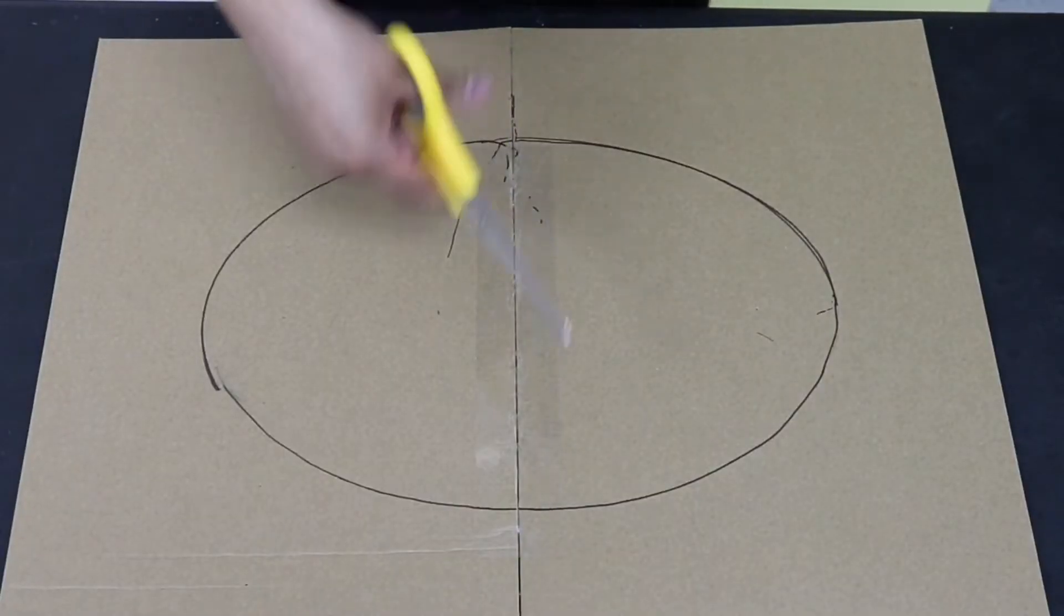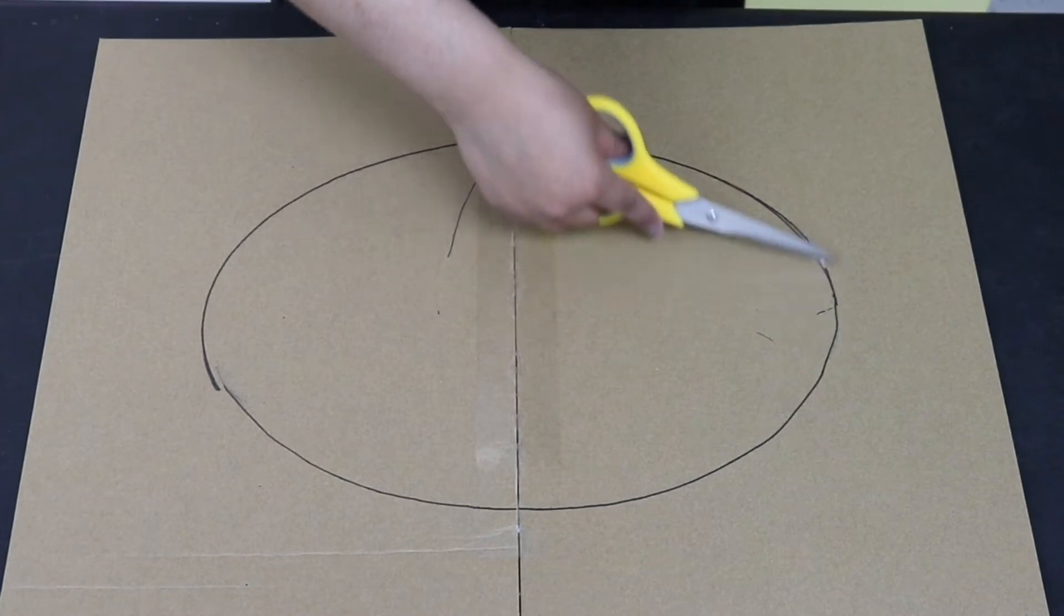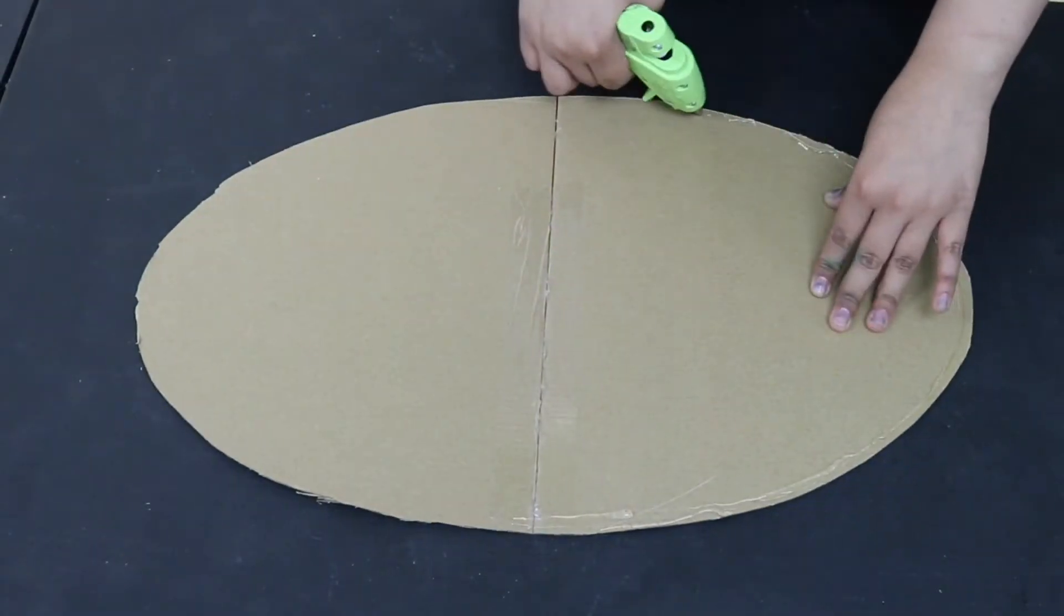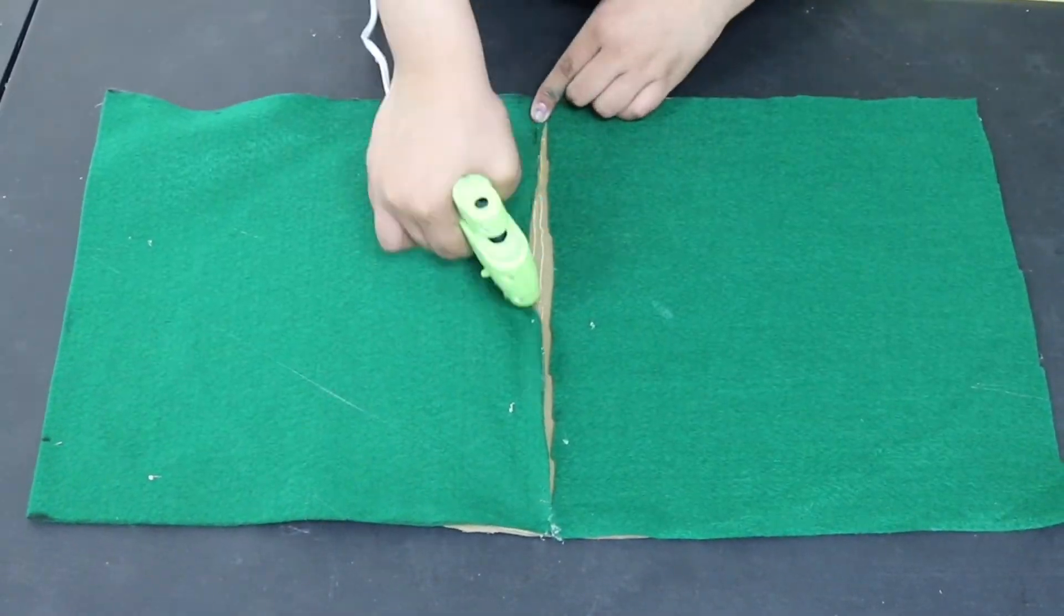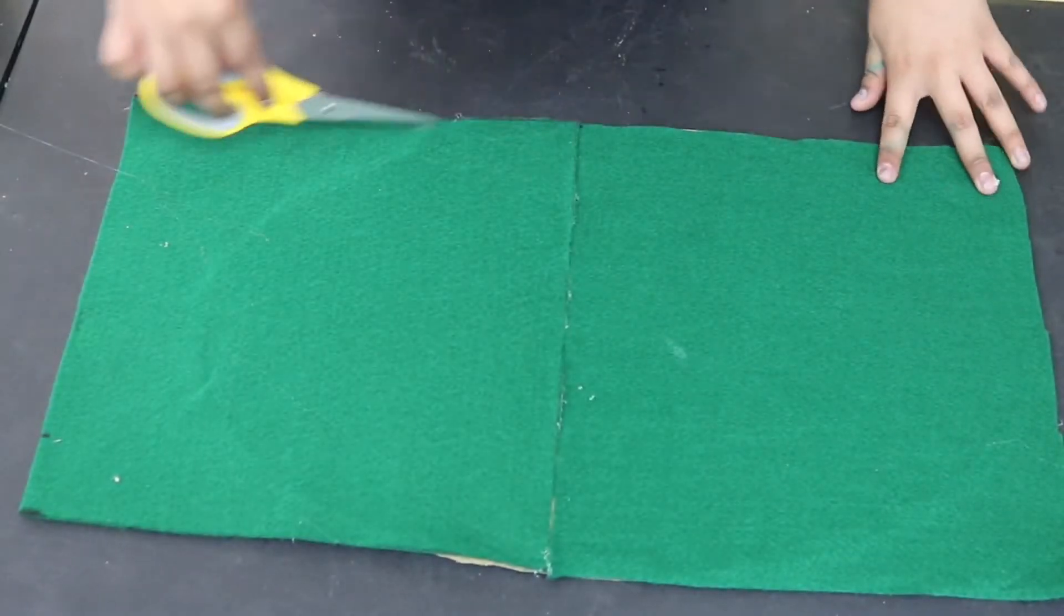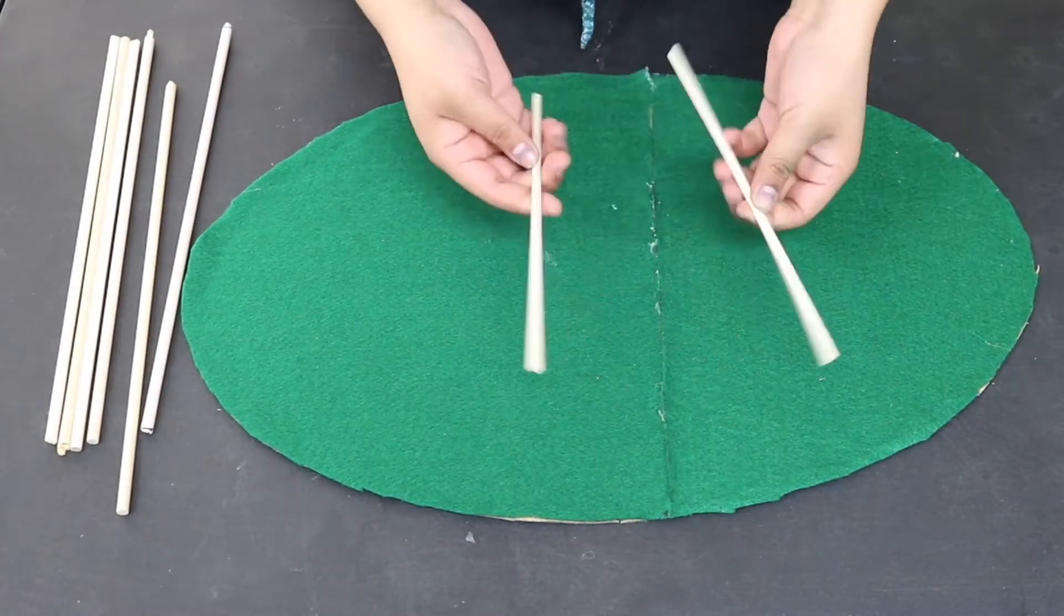Once you're done drawing your oval on the cardboard, cut it out with your scissors. Once the oval has been cut out, take your felt fabric and glue it onto the oval. You'll need your scissors again to cut any excess fabric that was left over.